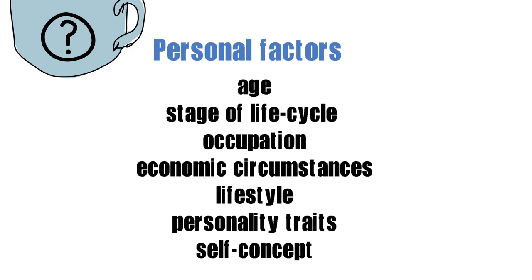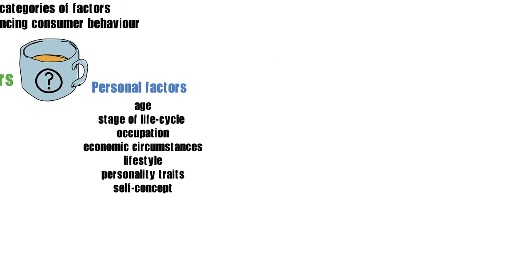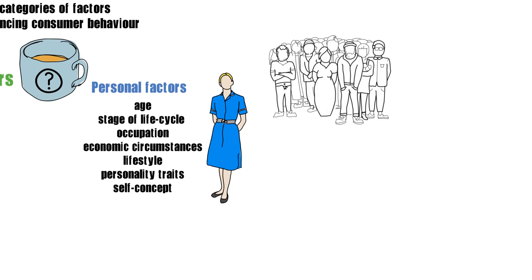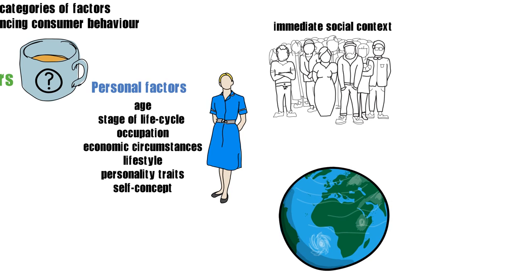One way to understand how all these factors connect with each other is by considering the individual and his or her environment — that is, the context within which this consumer is situated. We can then distinguish between the personal characteristics of a particular consumer, their immediate social environment which could include aspects such as family, peers and significant others, and a wider social context which would include social norms, culture, and other social and economic conditions.